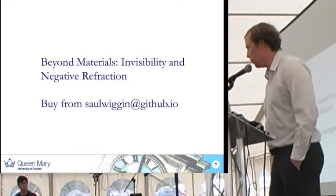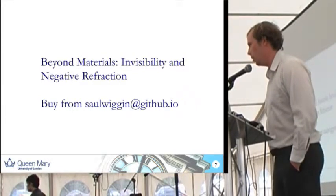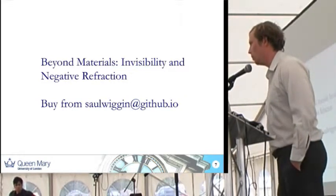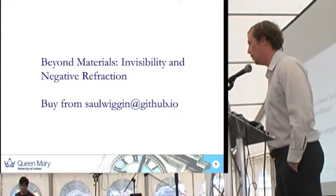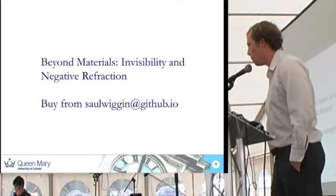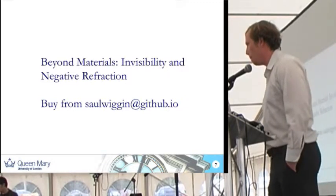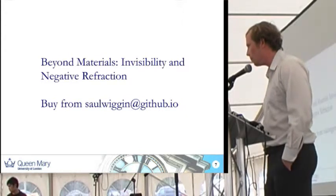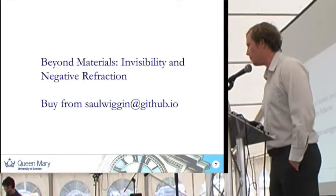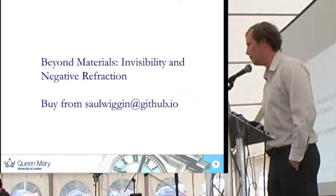It mostly works on microwaves, so a lot of experiments are done at around 8 GHz. When you're getting to optical frequencies it's more difficult, and people tend to use silver. If you're going to do lenses and that sort of thing, it's technically quite difficult to make a lens that will have negative refraction — the technical requirements to make such a lens are possibly significantly more difficult than a conventional one.